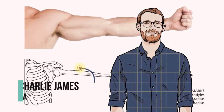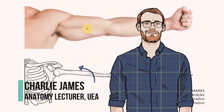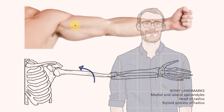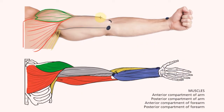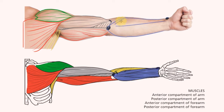Hello, welcome to the second video in this series looking at the surface anatomy of the upper limb. In this video we'll be drawing the arm and the forearm, and as always if you want to draw along you can find a link to the images below.